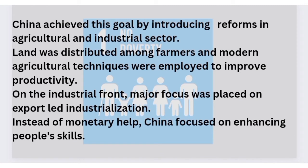China introduced many reforms in the agricultural and industrial sectors. In agriculture, land was divided and distributed among farmers, and they were taught modern agricultural techniques and provided modern equipment to increase agricultural output and enhance productivity. Additionally, government control over markets was significantly reduced, and restrictions on inter-regional trade were eliminated to facilitate trade.